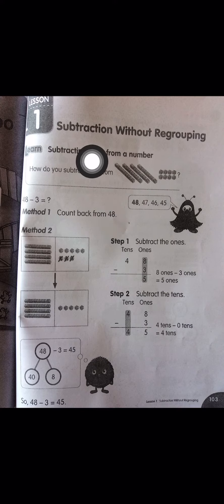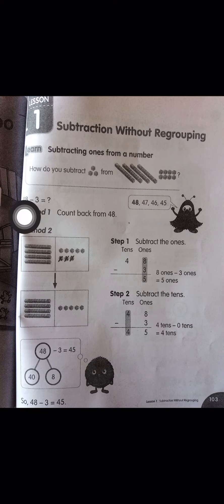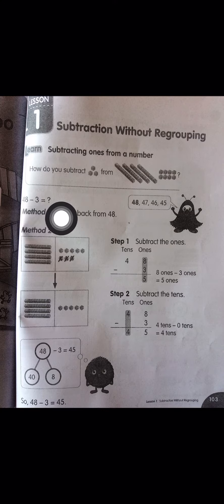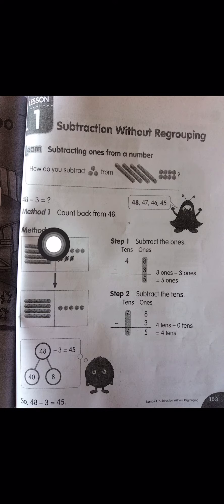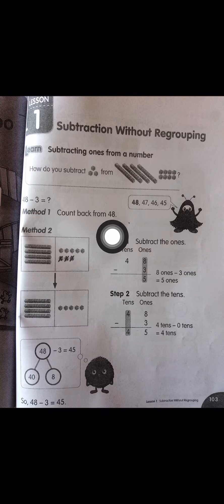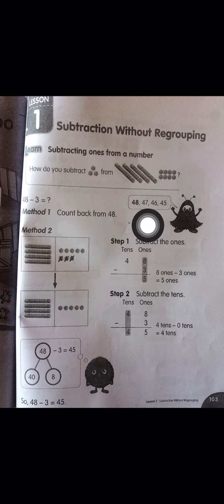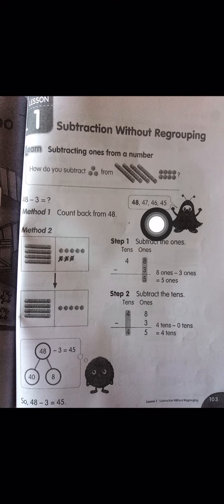48 subtract 3 equals... So there are two methods. Method one: count back from 48 — 48, 47, 46, 45. So you will see the answer: 48 subtract 3 equals 45.